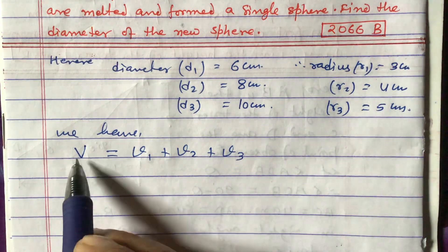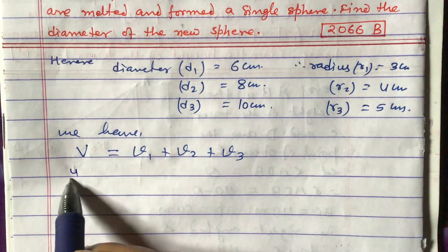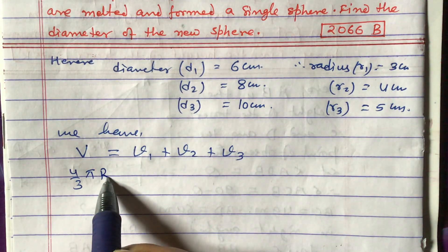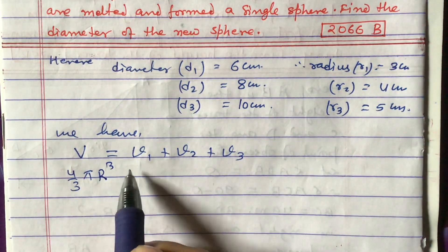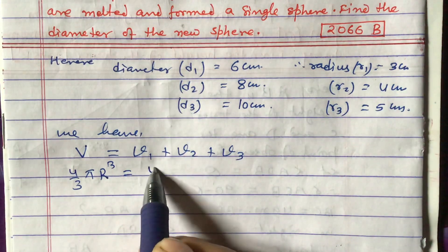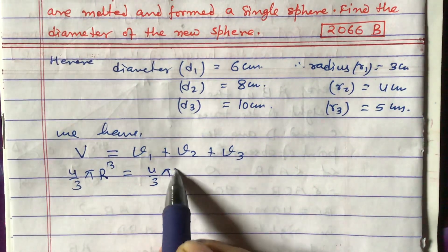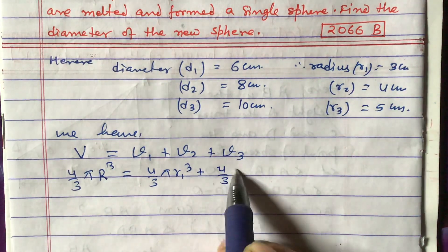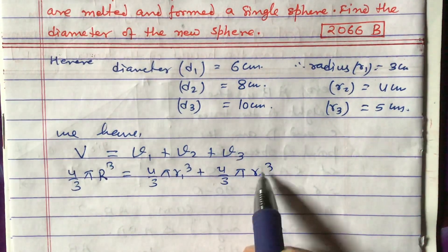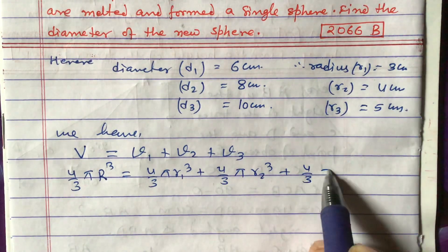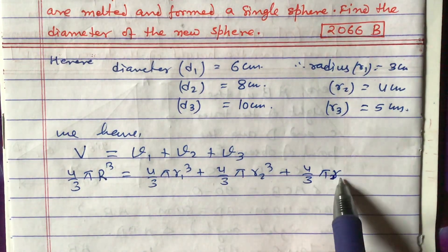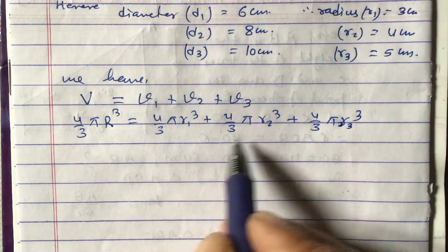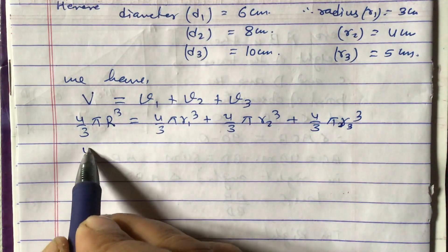So now V means (4/3)πR³. We write: (4/3)πR³ equals V1 plus V2 plus V3, which is (4/3)πr1³ plus (4/3)πr2³ plus (4/3)πr3³.